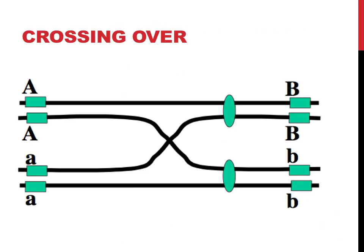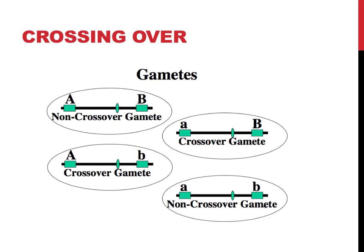Bits of information from homologous chromosomes can be swapped out with one another during prophase one of meiosis. When crossing over occurs, you can end up with these results. A small percentage of the gametes would contain a dominant form of gene A and a recessive form of gene B, or vice versa.